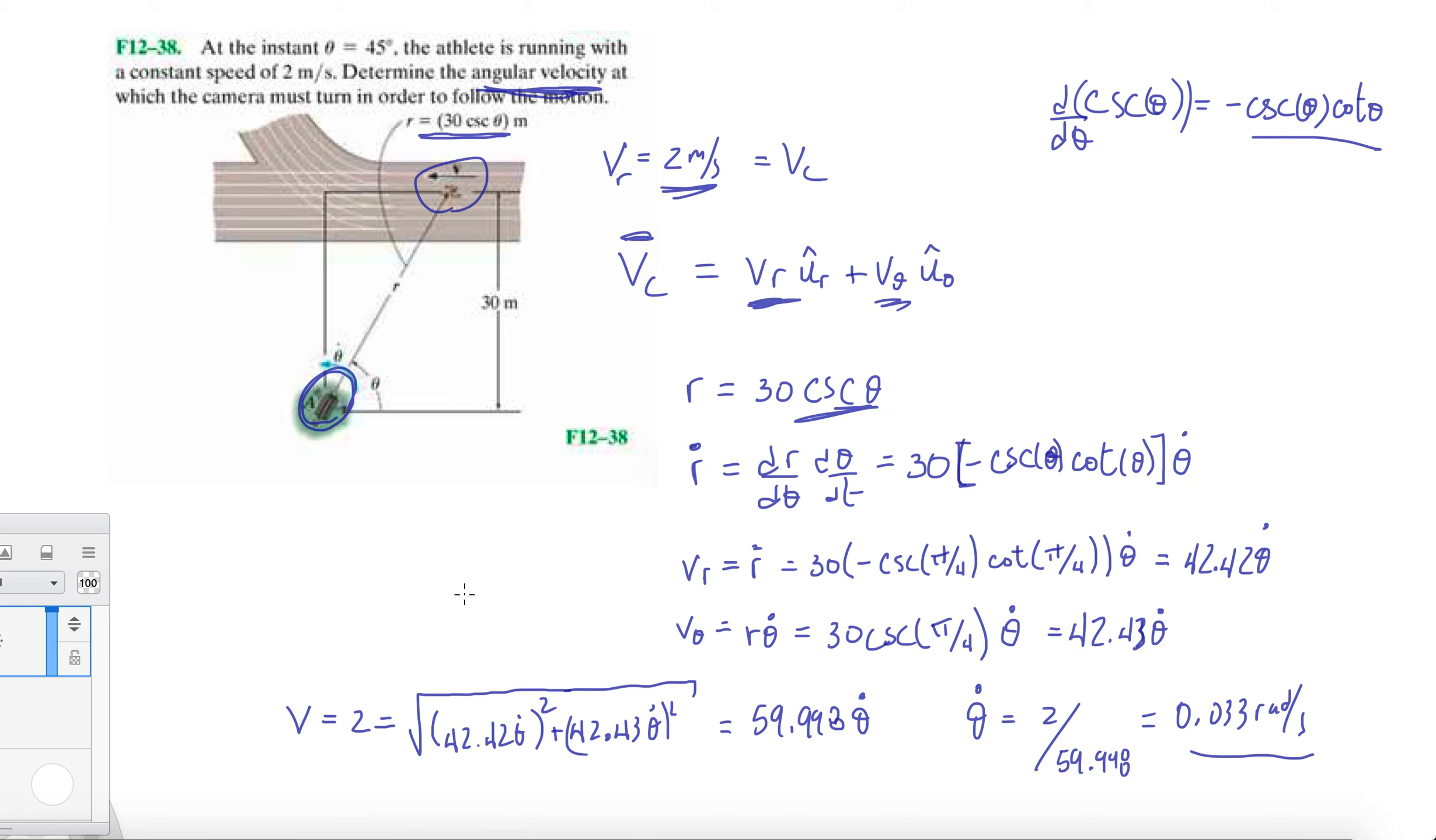So again, this is probably the trickiest one because you're kind of working your way backwards. Before, they always wanted the magnitude; here they give you the magnitude and want you to look for one of these dotted terms, which was theta dot in this case. I hope this problem helped and this section was super useful.